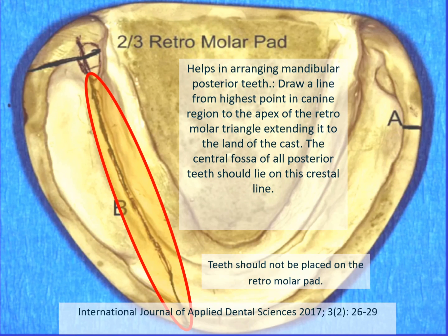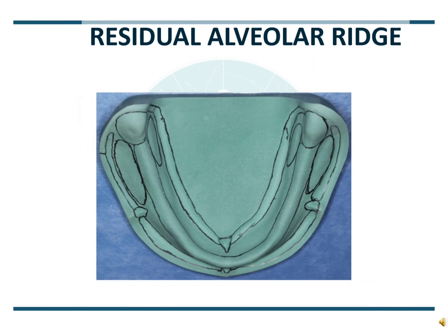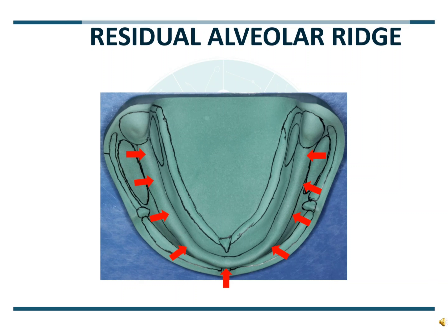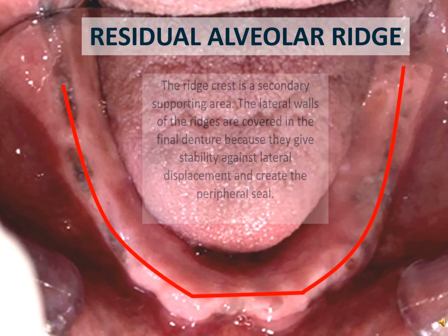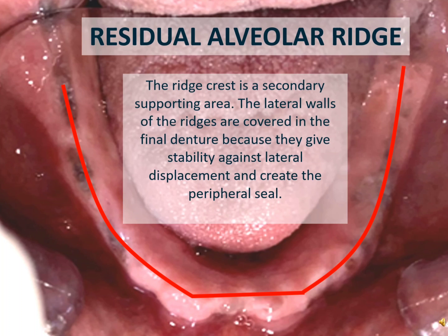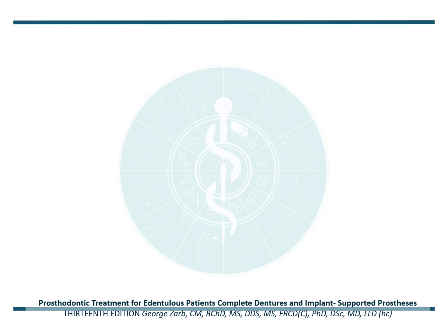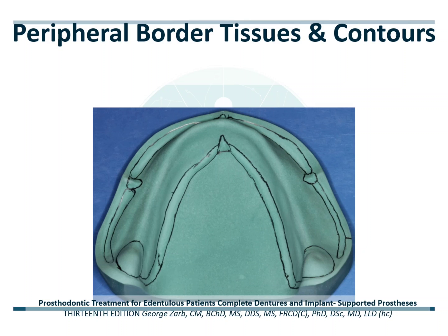Next we will talk about the residual alveolar ridge. The ridge crest acts as a secondary support area. The lateral walls of the ridges are covered in the final denture because they give stability against lateral displacement and create a peripheral seal. Moving on to the peripheral border tissues and contours, these include the labial frenum, the labial vestibule, the buccal frenum, the distobuccal area, the buccal vestibule, the lingual frenum, and the alveolingual sulcus.